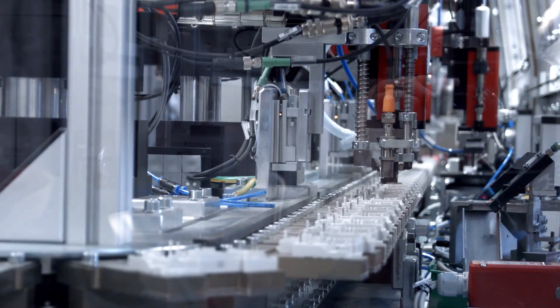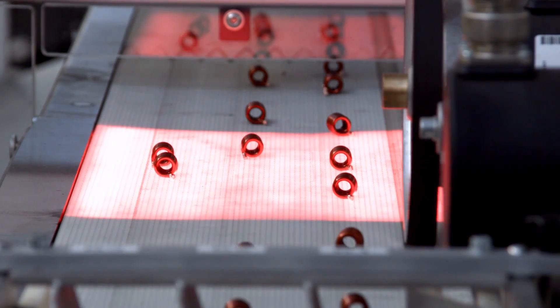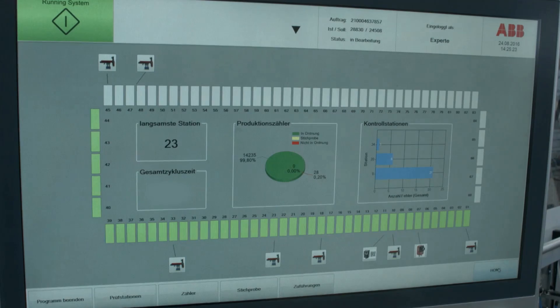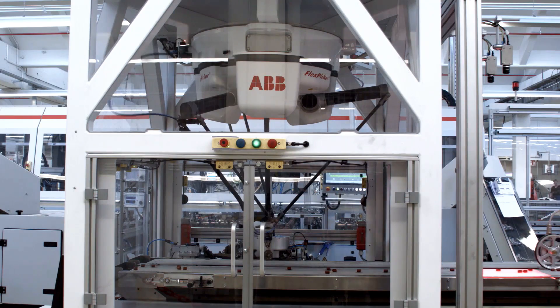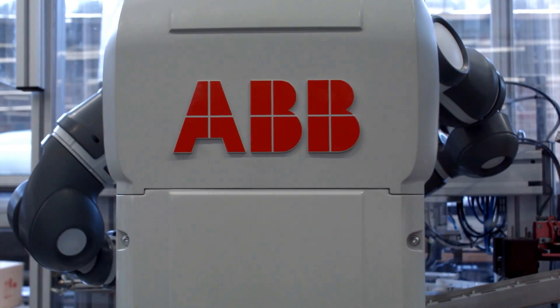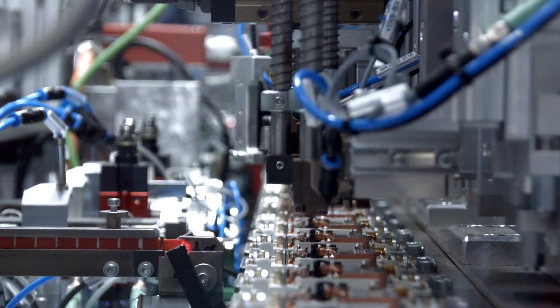The production line is equipped with sensors to capture data about the products and the machines at every stage of the manufacturing process. Seven ABB robots perform complex roles. Production stations work autonomously or together, adjusting their actions based on what happens at earlier stages of the manufacturing process.